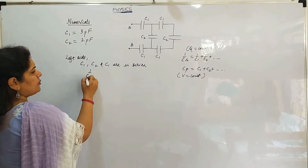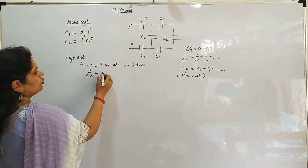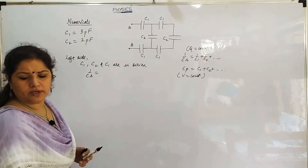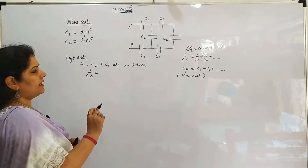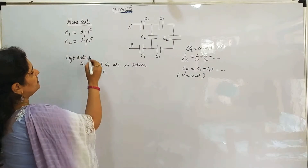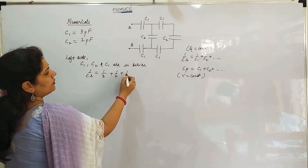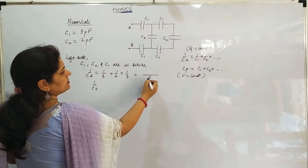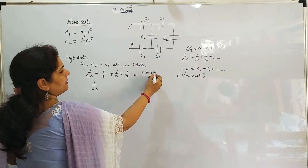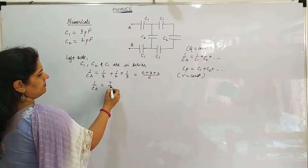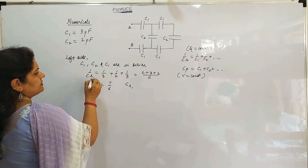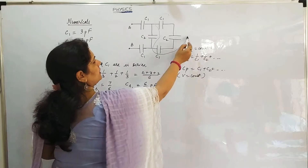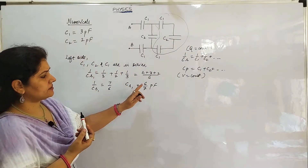We will calculate 1/Cs: C1 is 3, C2 is 2. Picofarad we will not convert until we get the final equivalent capacitance. So, 1/Cs = 1/3 + 1/2 + 1/3. The LCM is 6, giving 2 + 3 + 2 = 7/6. So Cs1 = 6/7 picofarad. This part is solved and the answer is 6/7.